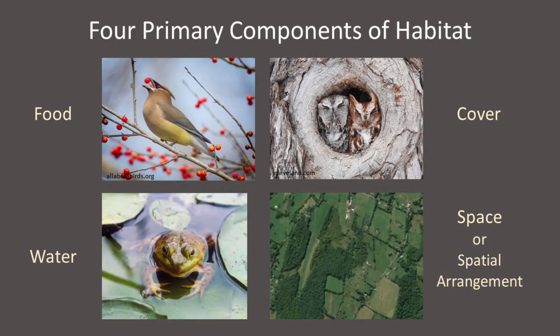But to accurately predict where different wildlife species will occur and how those wildlife will respond to changing conditions, we must first have a basic understanding of what the four primary components of habitat are and what these components mean to wildlife. The remaining presentations in this series will provide you with a general overview of each of the four primary components of habitat. These videos are intended to direct your attention to the specific things you should start looking for when you go outside and want to know what wildlife species will call this area their habitat.